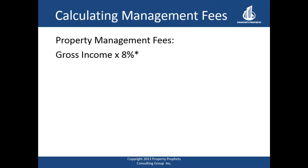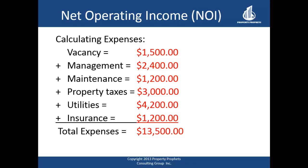Property management is an optional factor — you can choose to self-manage, hire a caretaker, or use a property manager. However, a lender will use this factor in their DCR calculations regardless of your method or cost. We'll use an 8% factor: gross annual rent income times 8% gives $2,400 for the year. So our total expenses are: vacancy $1,500 plus management $2,400 plus maintenance $1,200 plus property taxes, utilities, and insurance — totaling $13,500 for the year.